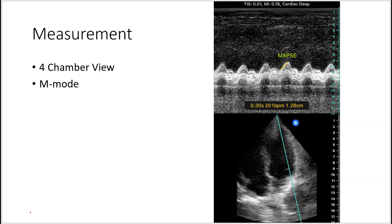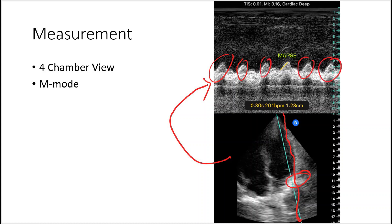To measure MAPSE, you first obtain the four-chamber view, and then you go into M-mode, and then you align the M-mode line against the lateral wall of the left ventricle near the mitral valve area. You will get something like this — here are the displacements or the excursions of that mitral valve annulus area, and then you can measure the slope that's uprisng, and that is your MAPSE.